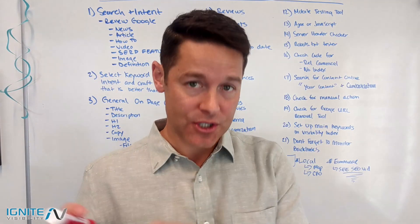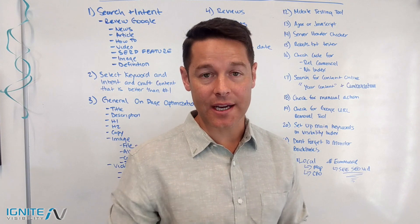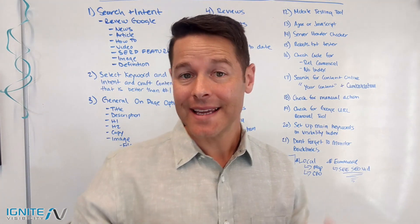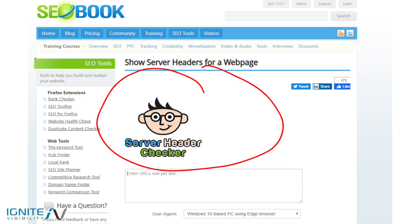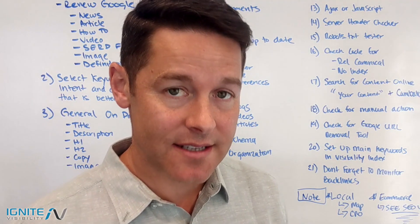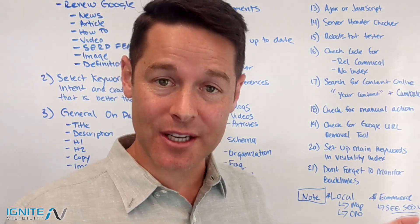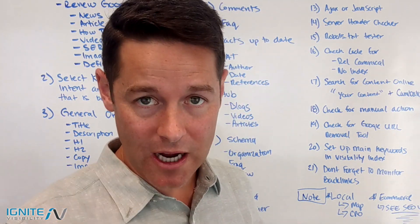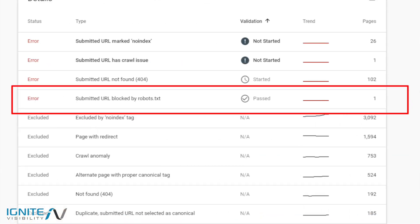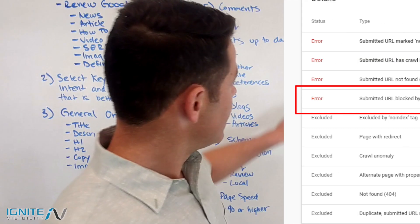Item number fourteen: run your page through a server header checker and make sure it's returning a 200 OK — that means Google can index the page. Item number fifteen: do a robots.txt test to make sure that page is not blocked. Inside Google Search Console you can drop a page in and see if it's blocked by your robots.txt file — it's a good check to ensure there are no indexing issues.